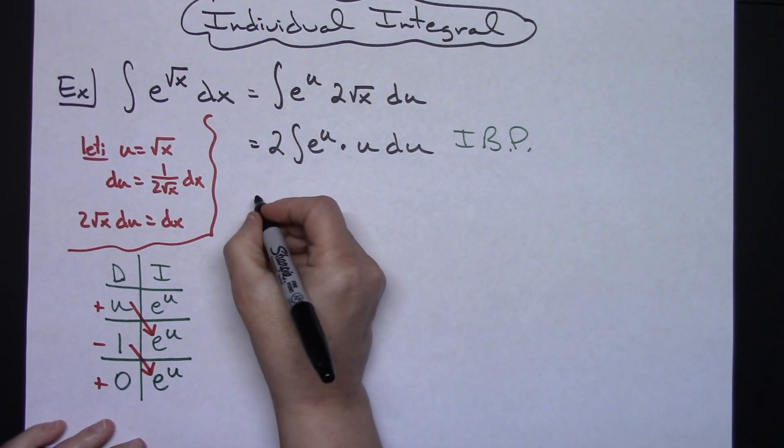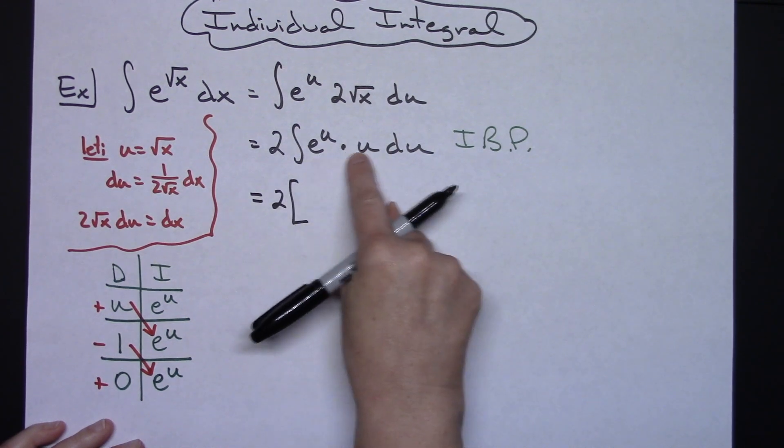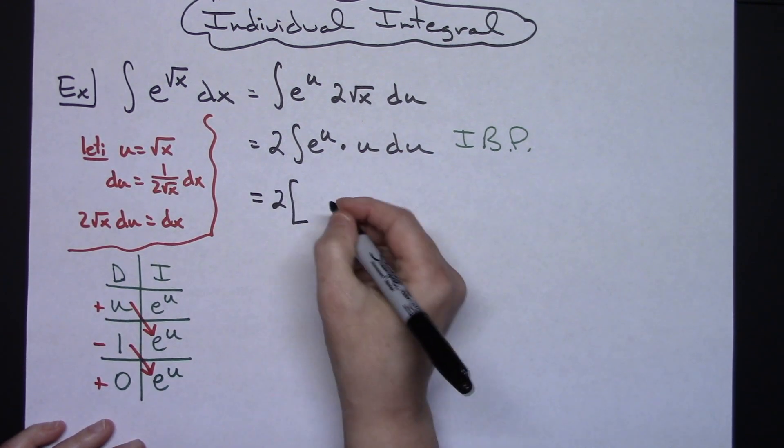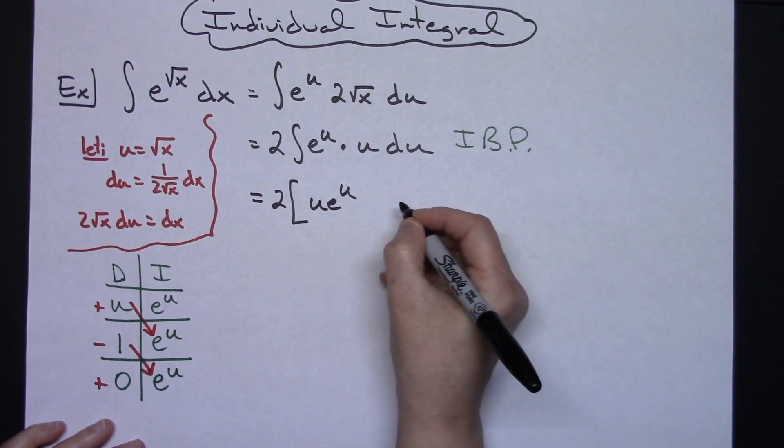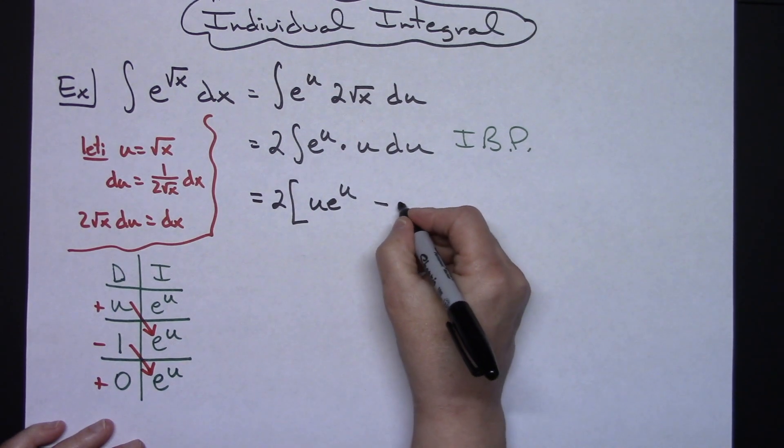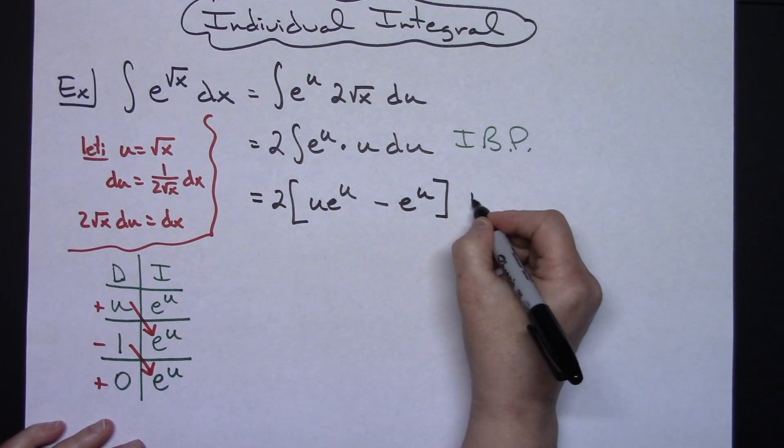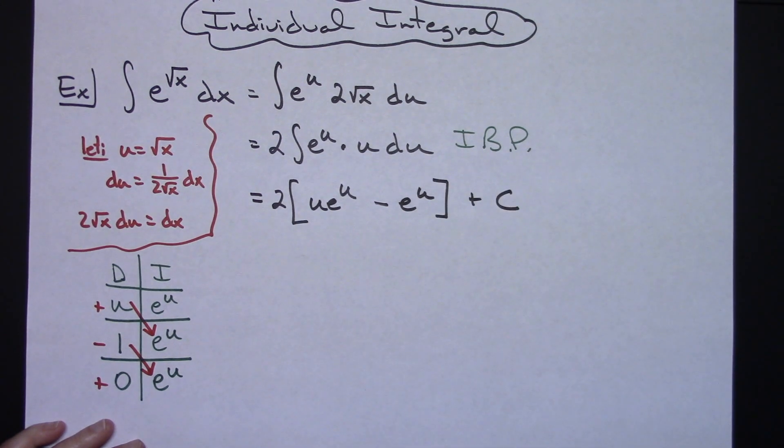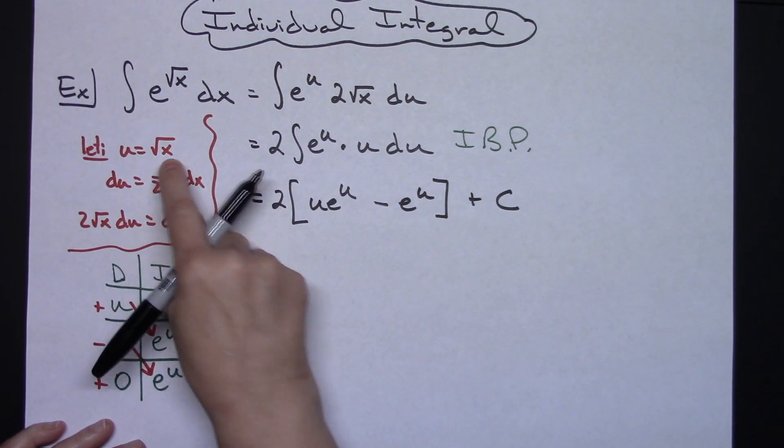So coming back up here, the 2 is still going to be there, and then this integrates to u times e to the u minus e to the u. And then we can go ahead at this point and put our plus C because we have done the integration.